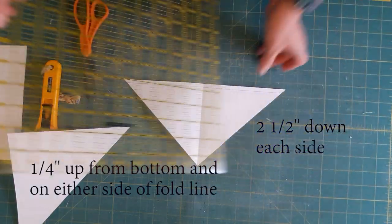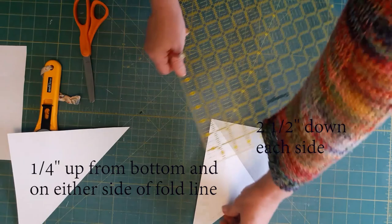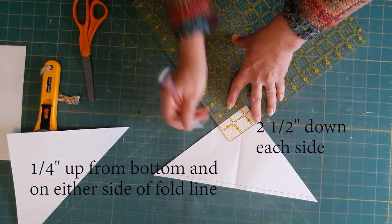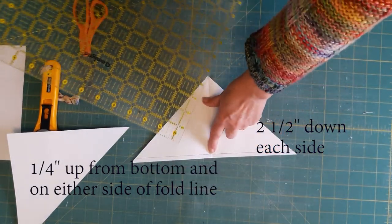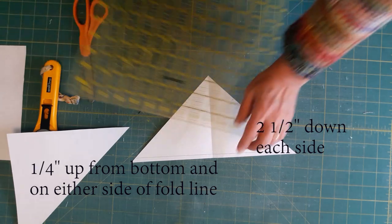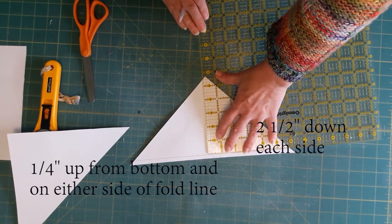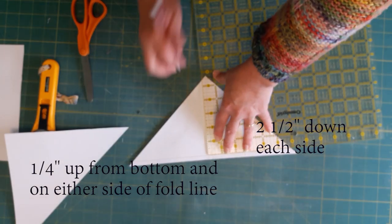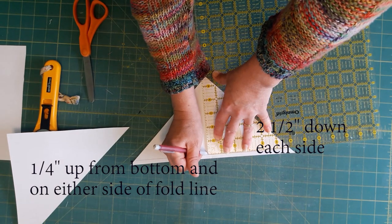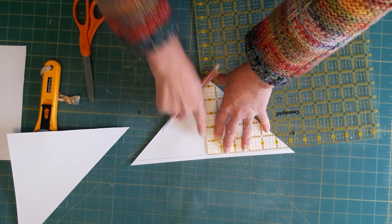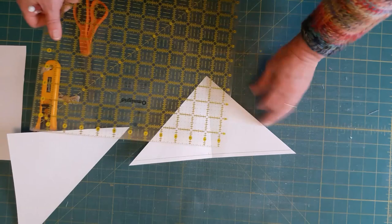Then down here at the bottom where this fold is, I'm going to measure a quarter inch so it intersects with the original quarter inch line that I made, and I'm going to do that on either side.